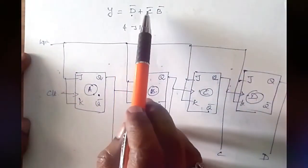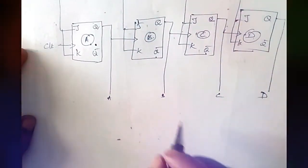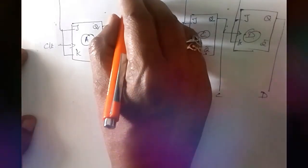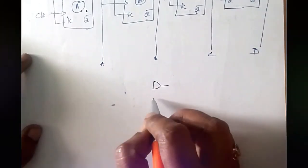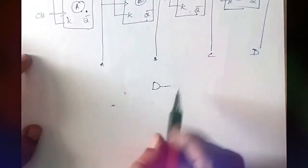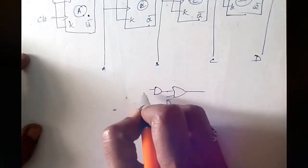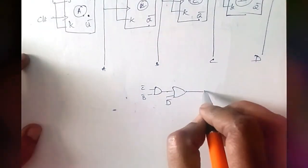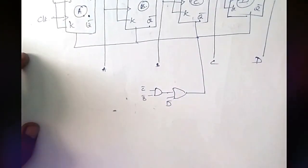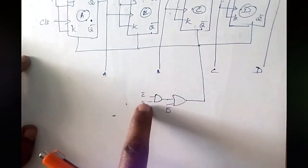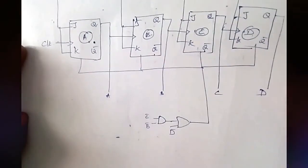Now we connect the reset logic. The reset logic is D complement plus C complement B complement, and this logic is connected to all the flip-flops. We use one OR gate and one AND gate. The output of the AND gate is connected to the OR gate along with D complement, and C complement and B complement go into the AND gate. This is connected to the clear inputs of all flip-flops using Q complement of C, Q complement of B, and Q complement of D.